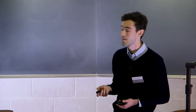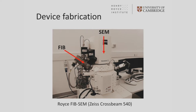Here's the system itself — the dual beam Zeiss CrossBeam 540. It has a scanning electron microscope, so there's an electron beam, and it also has a gallium ion beam which is used to physically mill away material and create those two slots I showed. That's the focused ion beam. With this system, I can both fabricate and also image what I'm making in the same system, which is very useful.